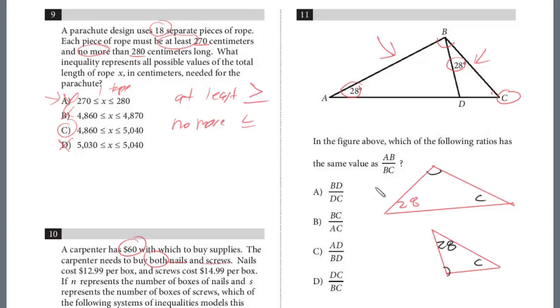And so we want the ratio of BD to DC. So I'm going to put the letters on. So A, B, and C. And B, D, and C.